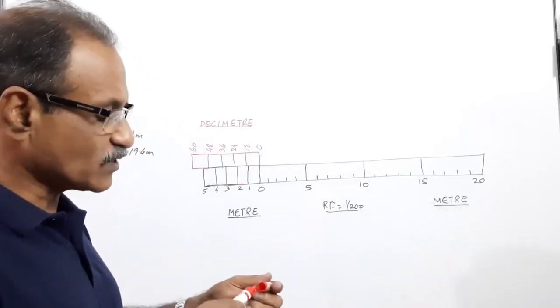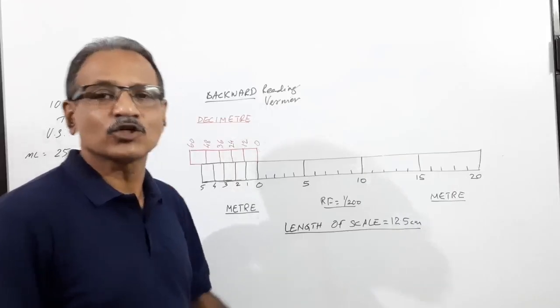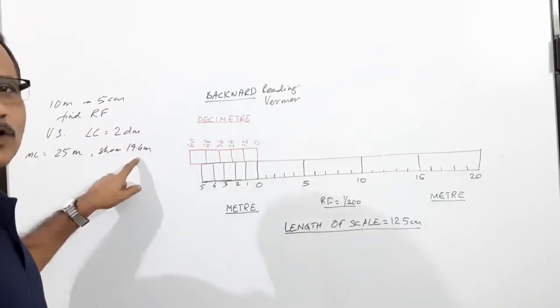This is the construction of the scale. Now you are asked to show some distance. What is the distance? 19.4 meters.